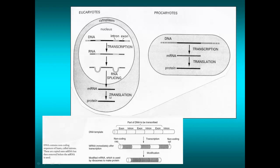The next stage is translation — reading the mRNA and making a protein from it. In prokaryotes, the modification stage is shown differently, but increasingly evidence suggests that introns do exist in prokaryotes just as in eukaryotes, perhaps just less commonly.